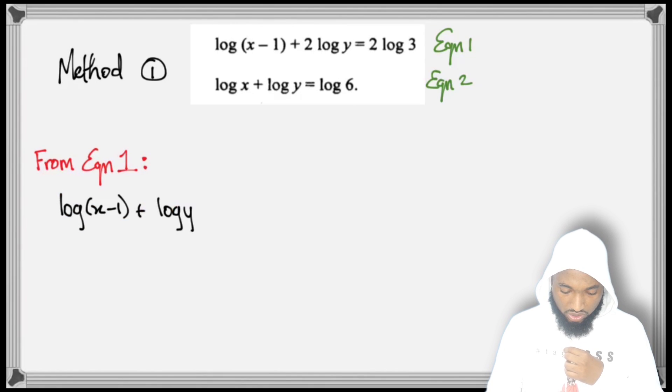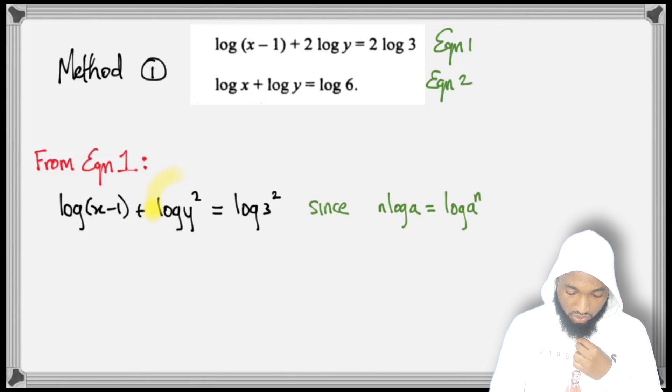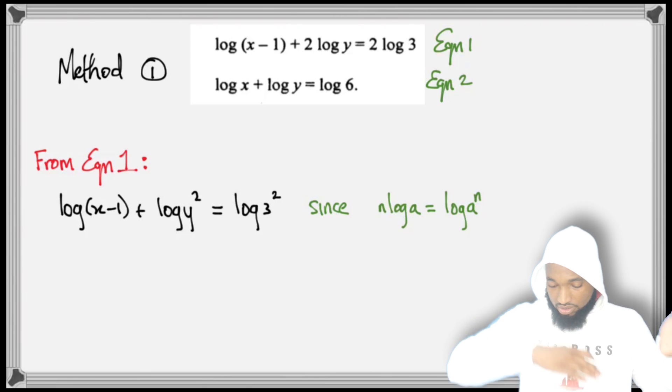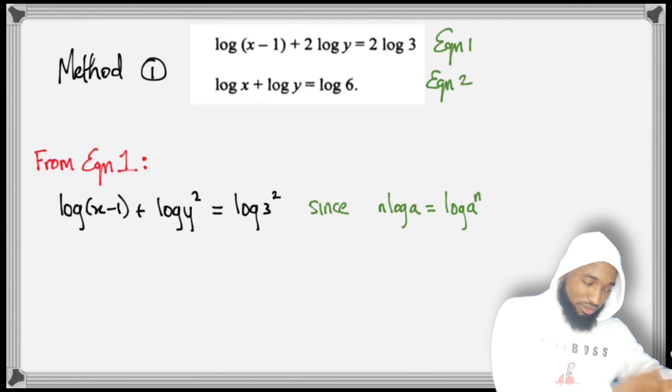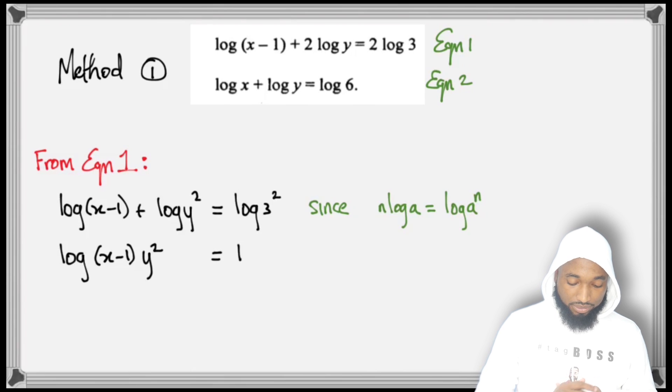For Equation 1, notice what I'm doing here: this 2 goes up there via the log rule. You could bring up the power to be up there, or you could send it down to be a coefficient of the log. This is the power rule—make sure you use it all the time.